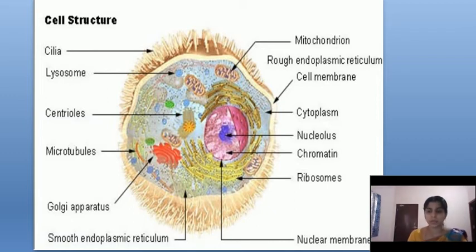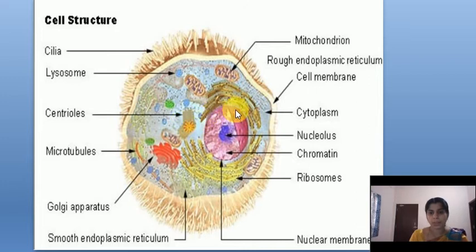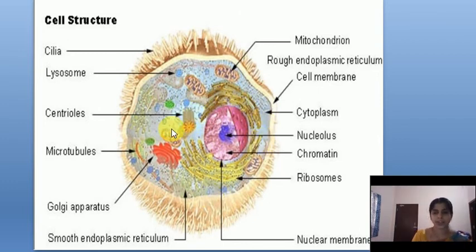The cytoplasm also contains other inclusions such as stored products — fats, lipids, starch, etc. Water is the main component of the cytoplasm, making up about 90%. Many chemical reactions take place here. Cytoplasm is the physical basis of all metabolic activities.